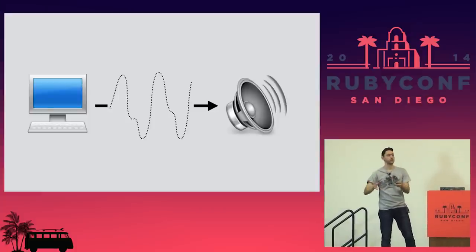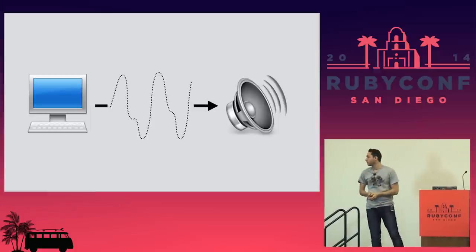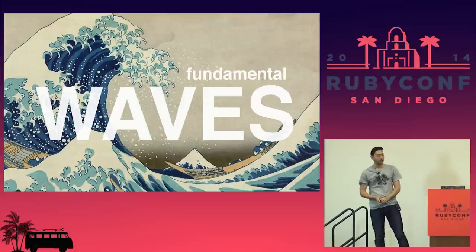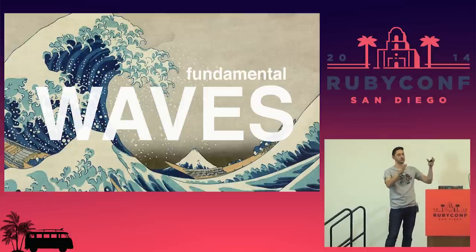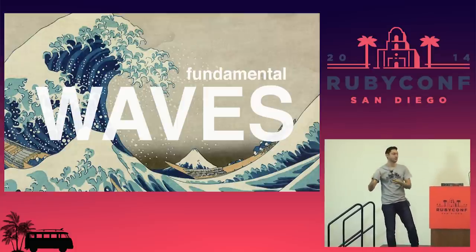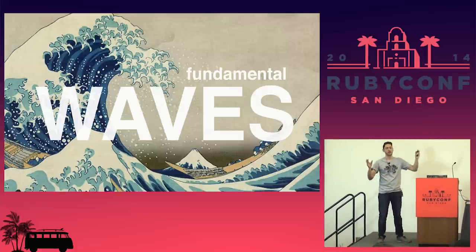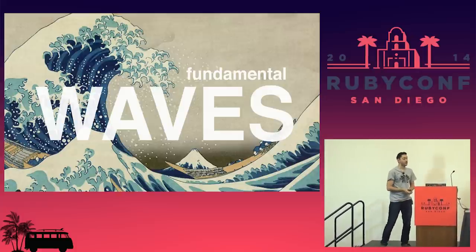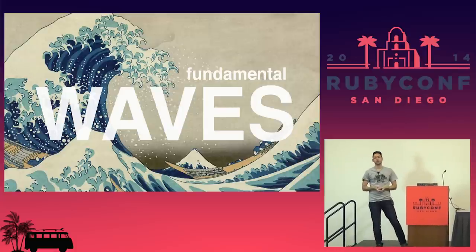The only thing that sits between your computer and the speakers is a bunch of numbers — just an array of numbers that you're pushing at your sound card. How do we actually create those numbers? What are those numbers representing? To understand that, we have to understand the fundamental waves that will create waveforms.